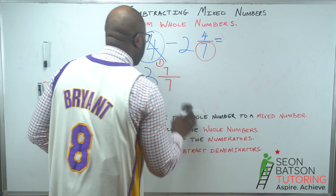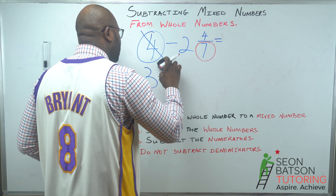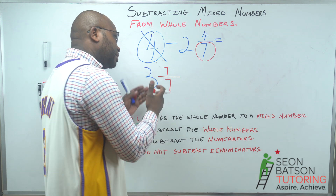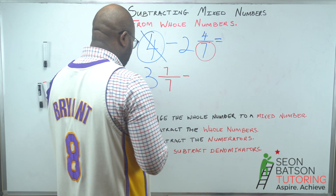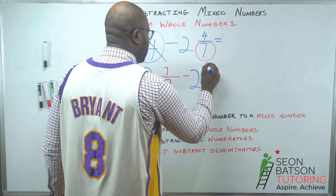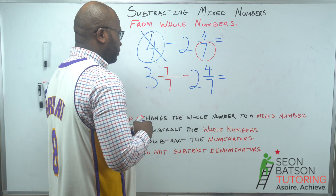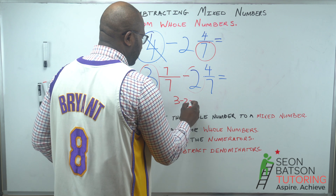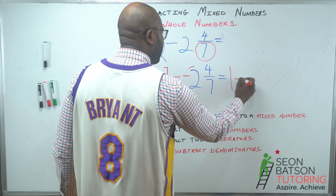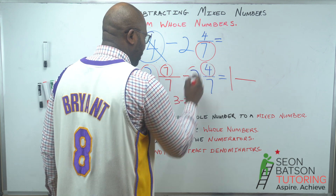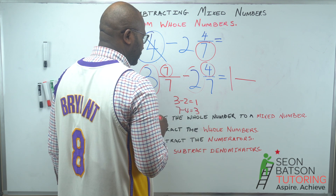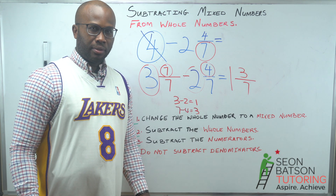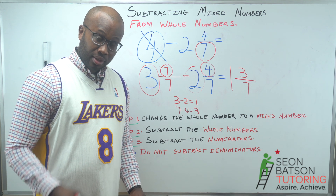Now that we've successfully changed our whole number to a mixed number, we put back the second mixed number: 2 and four over seven, and subtract. Whole numbers first: 3 minus 2 gives us 1. Then numerators: 7 take 4 gives us 3. The denominator stays the same — we do not touch the denominator. Simple and fun!